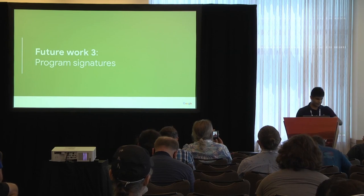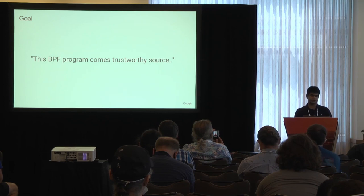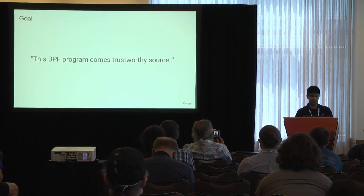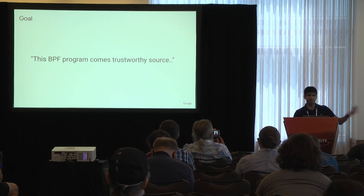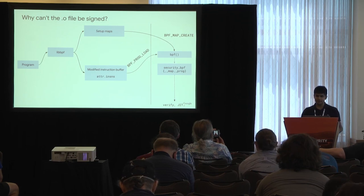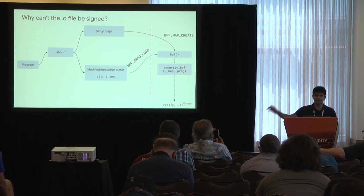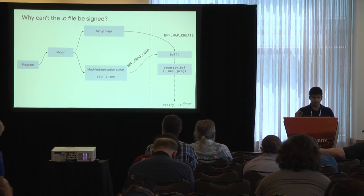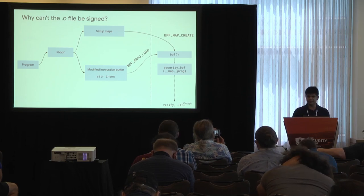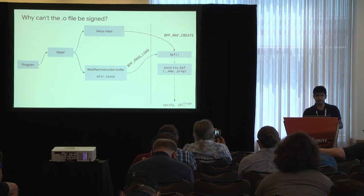The other future work currently ongoing is program signatures. We want to sign BPF programs — there's going to be a BOF later where we'll discuss BPF program signatures and IMA. The goal is that the build chain for your BPF program is trustworthy — you can trust where the BPF program is coming from. There is a dilemma: you can't really sign the object file generated at compile time, because struct fields are modified at runtime and all these maps are set up, so the actual instruction buffer gets modified and your signature is not stable. If you try to verify that signature in the kernel, you'll always get a different signature.